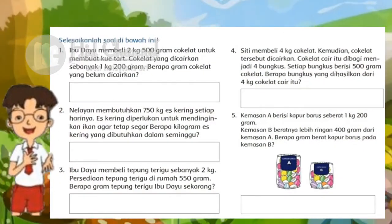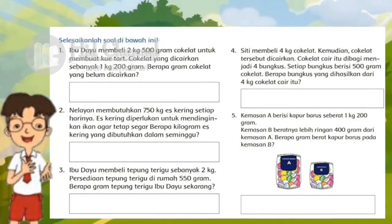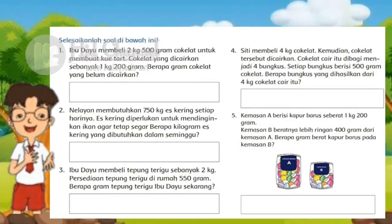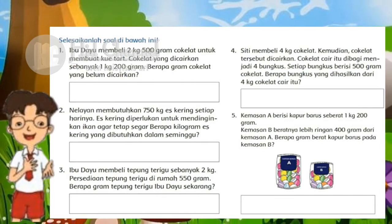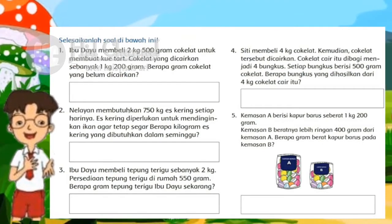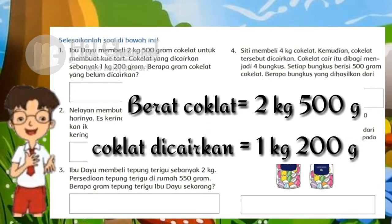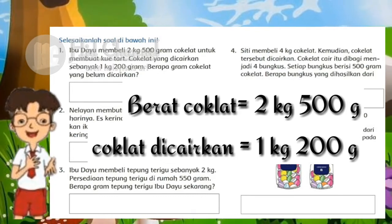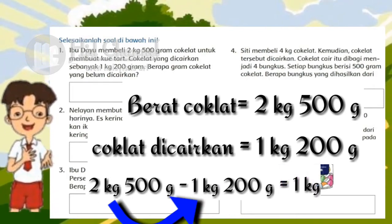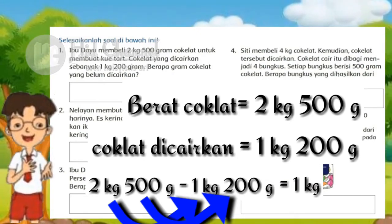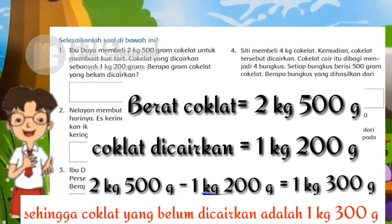Selanjutnya, selesaikan soal-soal berikut. Ibu Dayu membeli 2 kg 500 gram coklat untuk membuat kue. Coklat yang dicairkan sebanyak 1 kg 200 gram. Berapa gram coklat yang belum dicairkan? Kita hitung. Semua coklat 2 kg 500 gram, yang sudah dicairkan adalah 1 kg 200 gram. Sehingga, sisa coklatnya yaitu 2 kg dikurangi 1 kg hasilnya 1 kg, dan 500 gram dikurangi 200 gram sisanya 300 gram. Coklat yang belum dicairkan adalah 1 kg 300 gram.